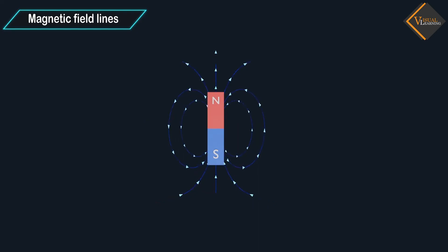Magnetic field lines are curved continuous loops which start from the north pole and end at the south pole.